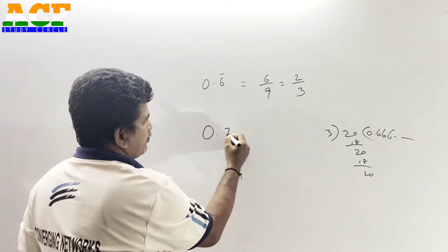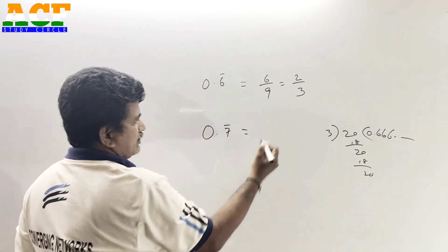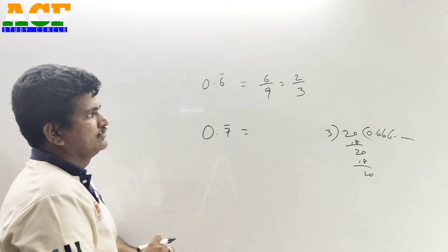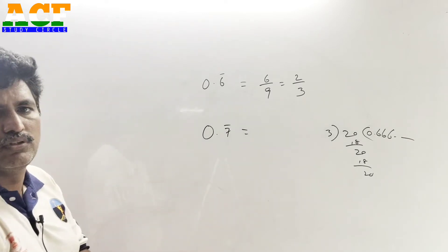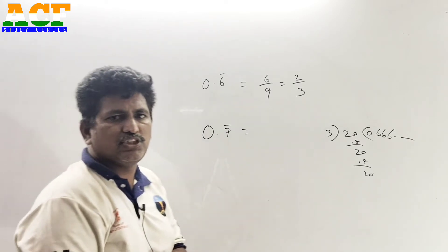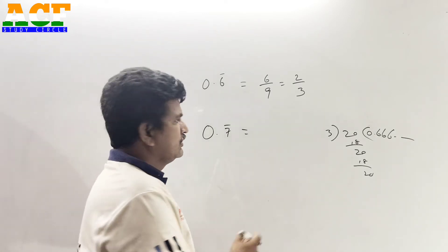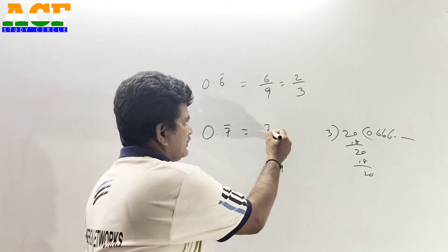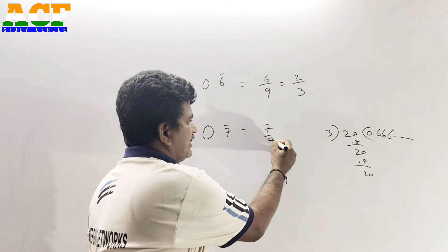Next question: 0.7 bar. So it is nothing but 7 by 9.